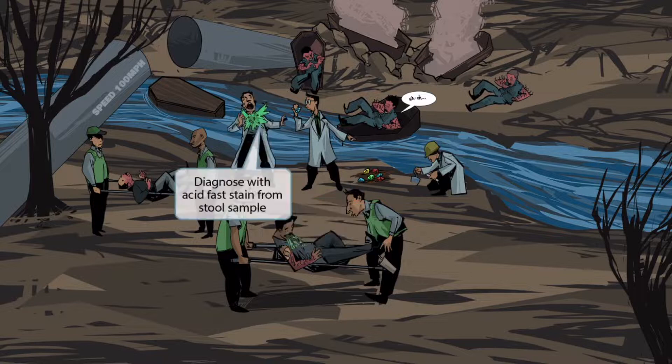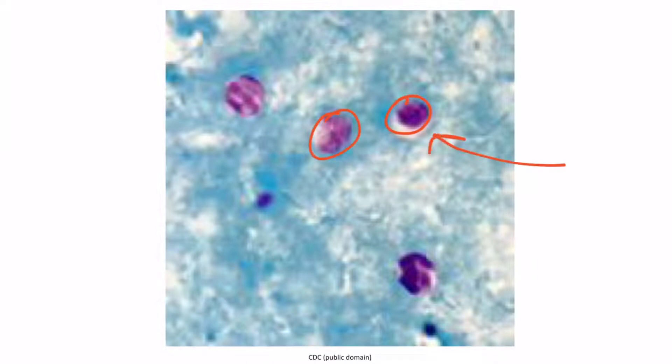This third scientist was going to test some of the dirt by placing it in a vial with some acid. Unfortunately, the reaction was so abrupt that the vial of acid exploded all over him so fast he couldn't react. This represents diagnosing using an acid fast stain, which reveals cryptosporidium oocysts — each one containing sporozoites, as we discussed before.